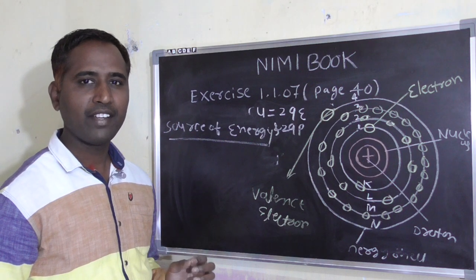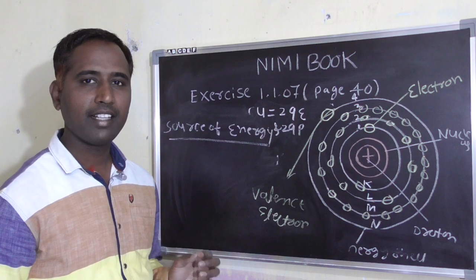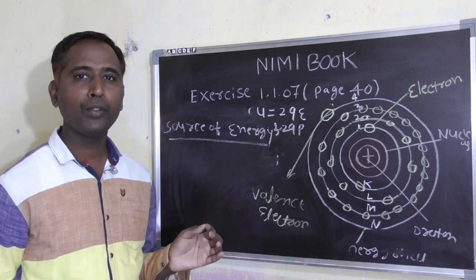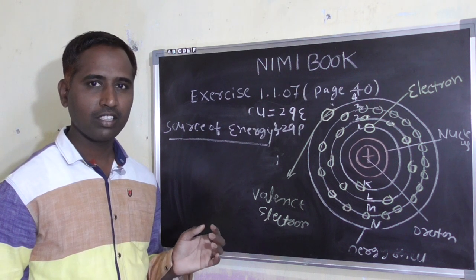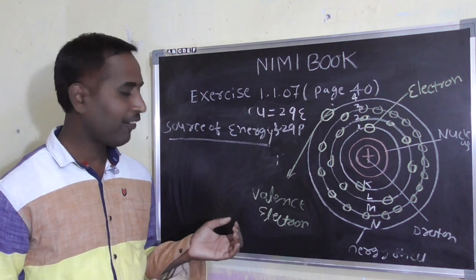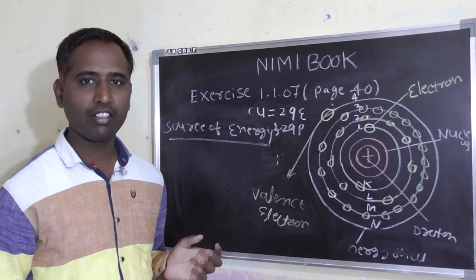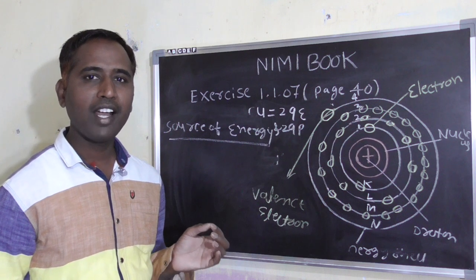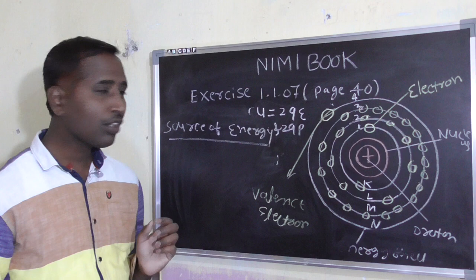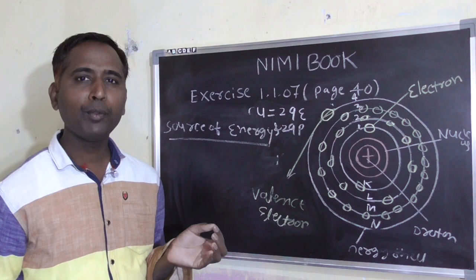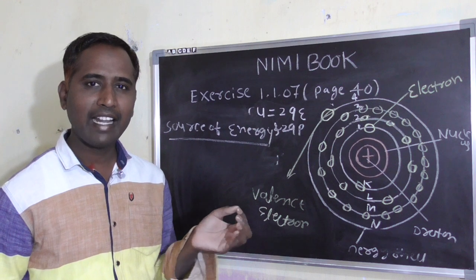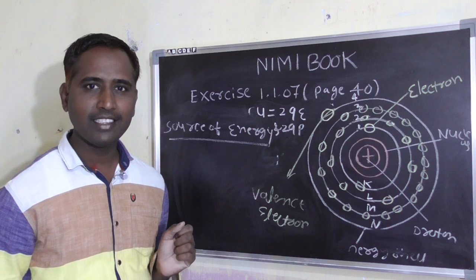Now I am going to start source of energy. Source of energy is used to remove a valence electron, to make a valence electron into a free electron. Before I start, I want to ask a few questions: Why should we have to remove a valence electron? Why should we have to make a valence electron into a free electron? Where should we remove a valence electron?